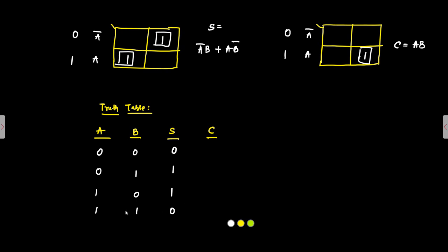The carry C equals A·B, which is an AND operation. Only when both inputs are 1 will the carry be 1; in all other cases — 0,0 and 0,1 and 1,0 — the carry is 0. This completes the truth table and the K-map implementation for the half adder.